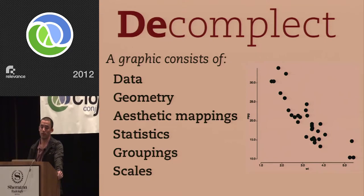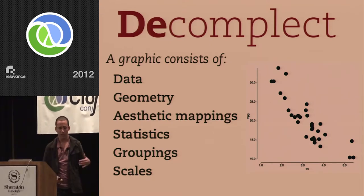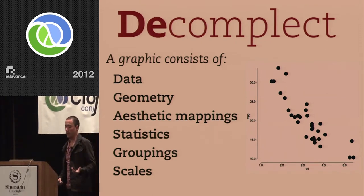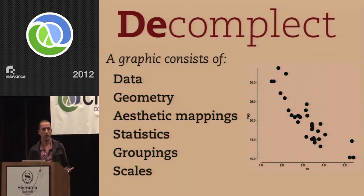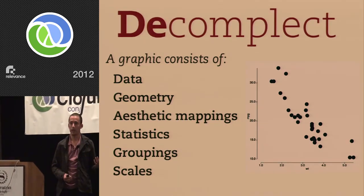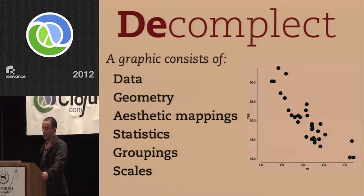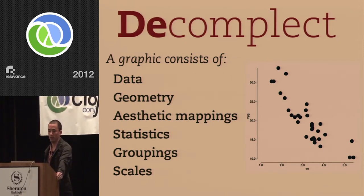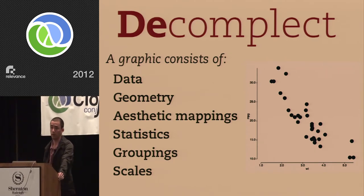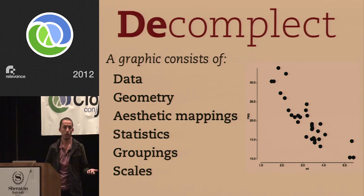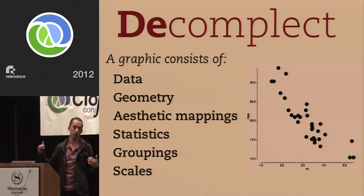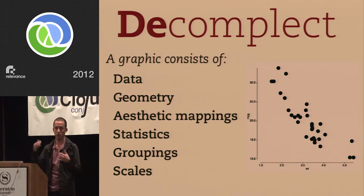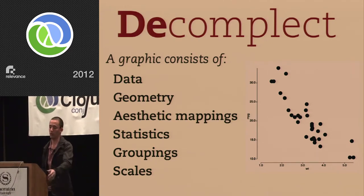In Rich's talk when he introduces the word 'complected,' he has the example of the knitted castle — if this is the graphic you want, great. If you want something slightly different, it's going to be a ton of work because all of this stuff is tied together. So the idea with the grammar of graphics is ultimately to decomplect all of this. You want to take a statistical graphic and break it into the different fundamental pieces: your data, the geometry you're using — points, lines, polygons, box plots — your mappings from data dimensions to the aesthetics of your geometry, statistics and groupings, scales, all that kind of stuff.